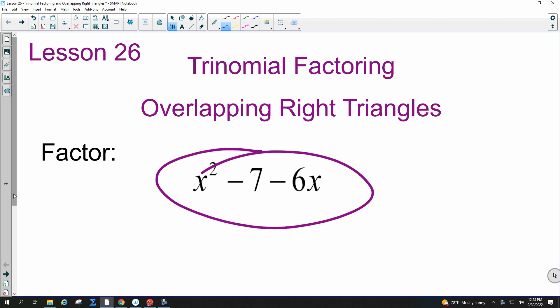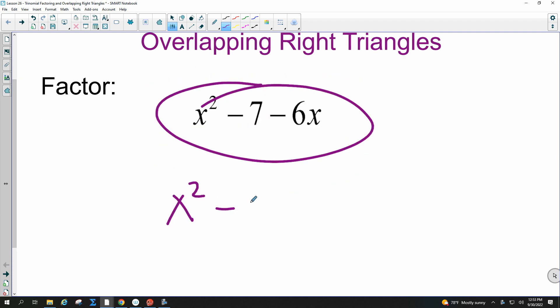So the x squared goes first, then the negative 6x, then the negative 7. A lot of people mess up when they don't write it in order, so I highly recommend you show a step like this, putting it in order, and then your answer.